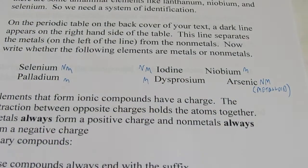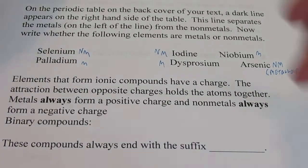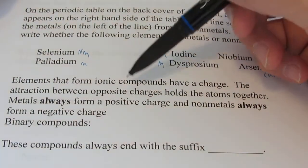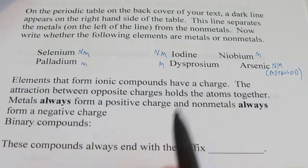Now, elements that form ionic compounds have a charge. We learned why they have a charge, right? Isn't it due to the gain or loss of electrons? And when they do that, they have charges. And those opposite charges hold the ions together.